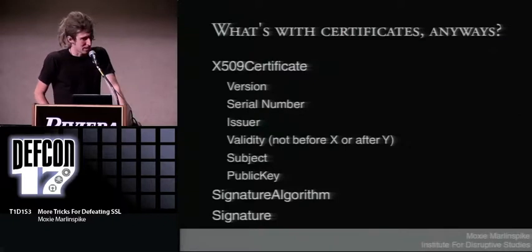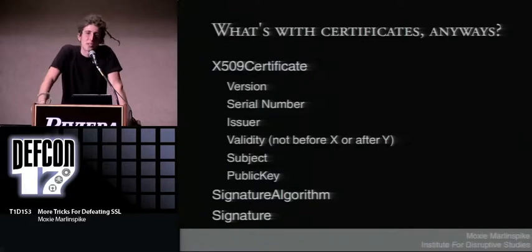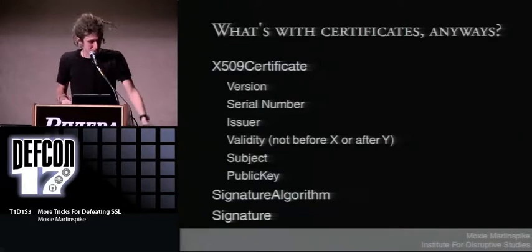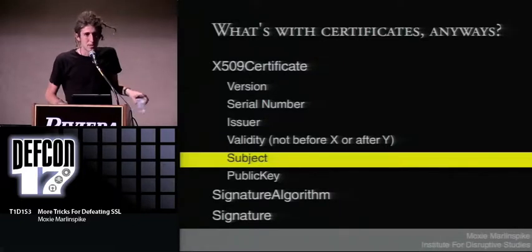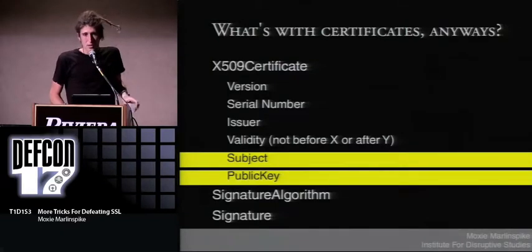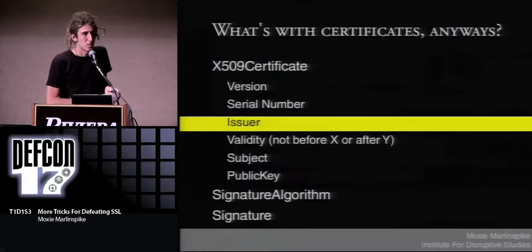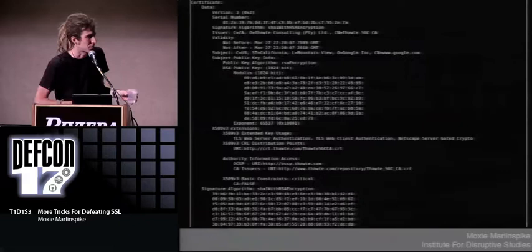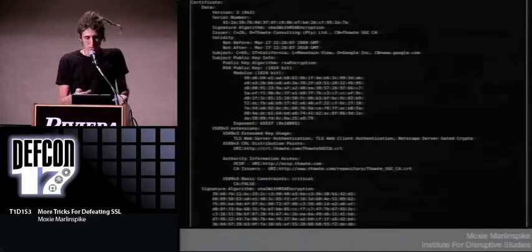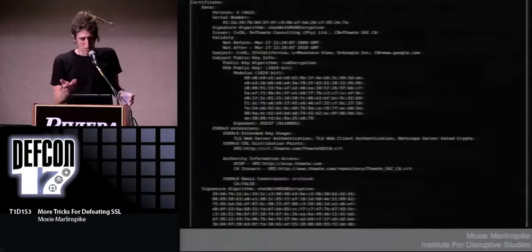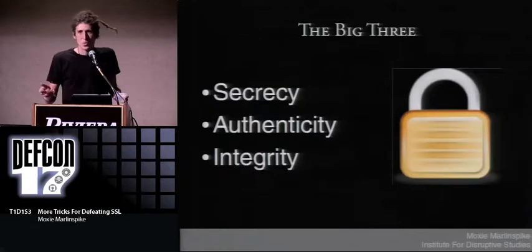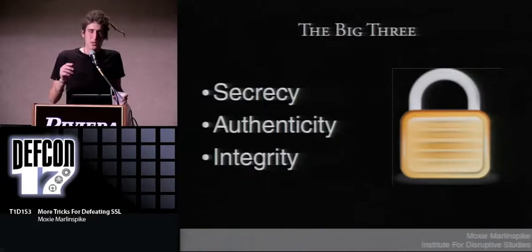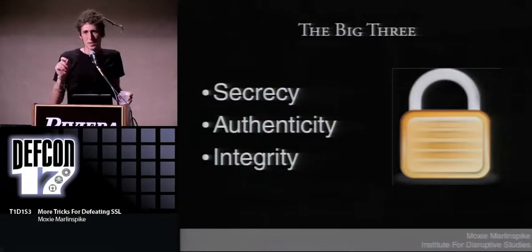What's up with certificates? They're simple structures. The basic point of a certificate is to identify some subject and convey that subject's public key. The certificate is issued by some issuer thought to be trustworthy, and it's known to be authentic based on that issuer's signature. When designing a secure protocol, the three big things are secrecy, authenticity, and integrity. Most people think of encryption and secrecy, but if you don't have authenticity and integrity, you don't have anything.